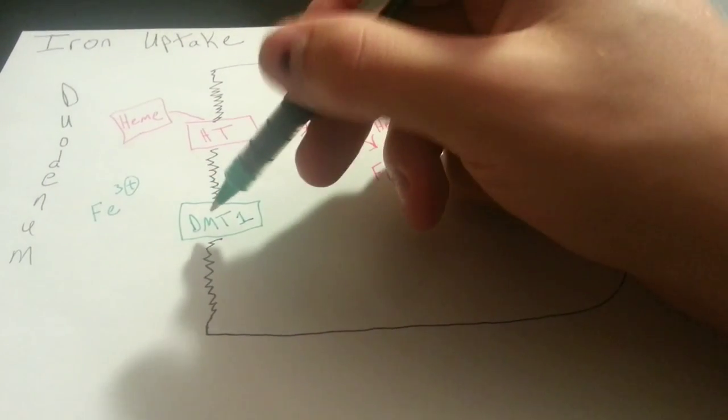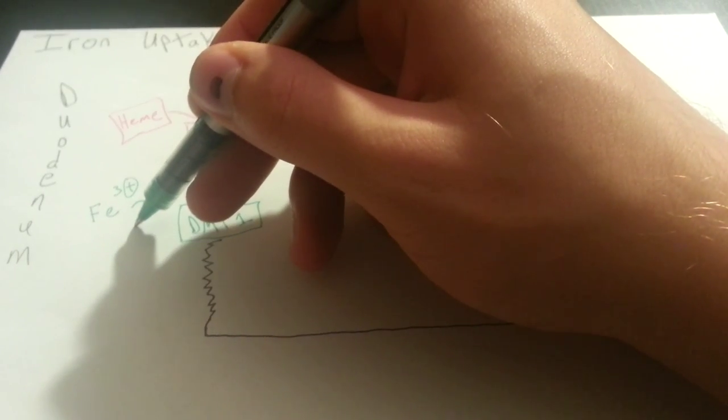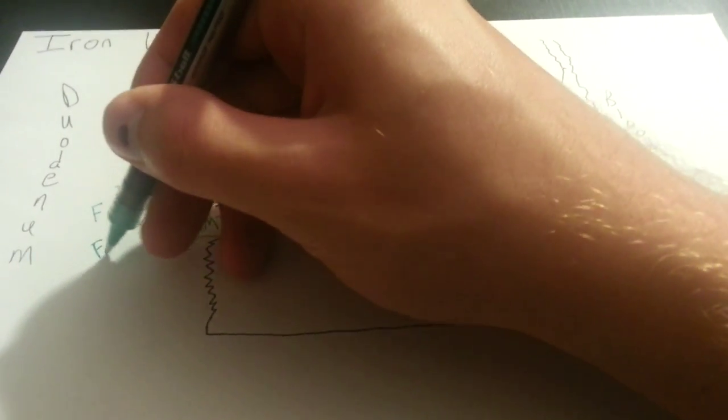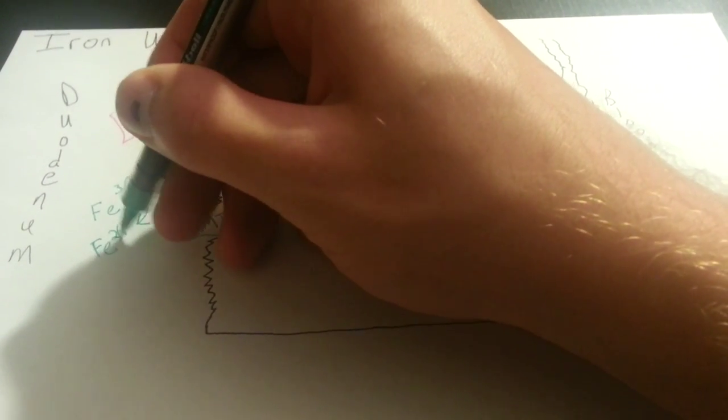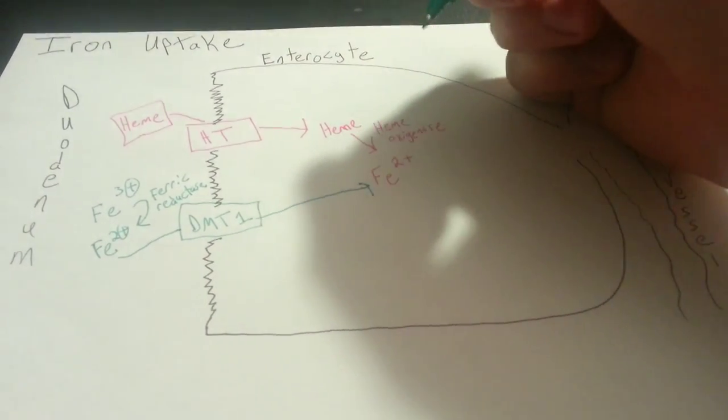So before we let DMT1 act on iron 3+, we need it to be acted upon by a ferric reductase, which changes this from iron 3+ to iron 2+, which is then able to go through the transporter and end up right where we were with our heme.